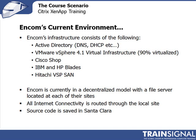Encom is currently in a decentralized model with a file server located in each one of their sites. All internet connectivity is routed through the local site. Source code is saved in Santa Clara but is constantly uploaded, so different copies of the source code for different projects exist at the different sites within Encom, and they are trying to avoid that.